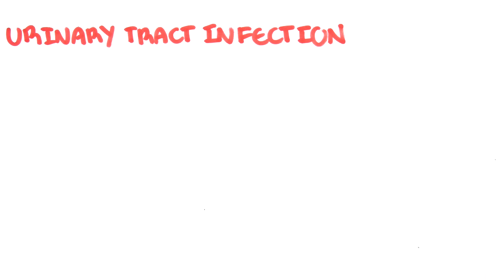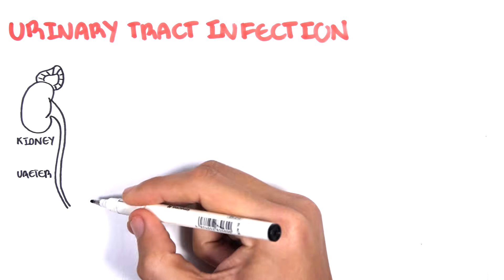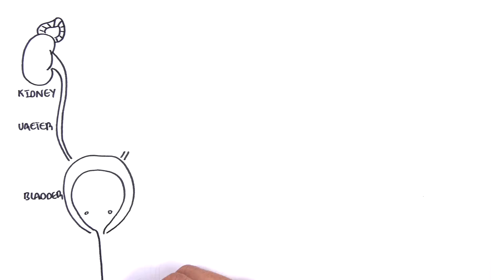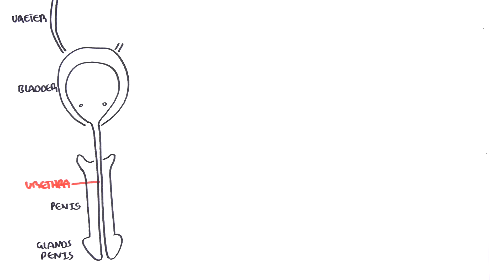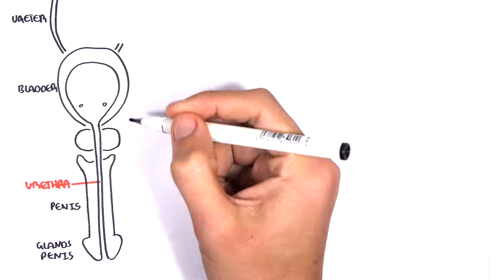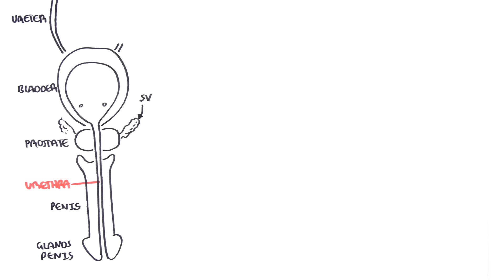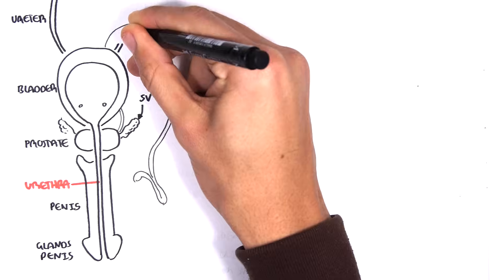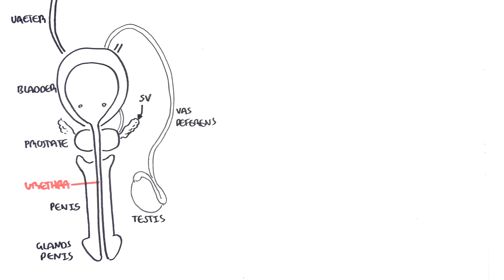Let us begin by looking at the male. Here we have the kidney. Coming off the kidney is the ureter, which carries urine into the bladder. Here we have the glans penis, the penis, and the urethra. Below the bladder we have the prostate. Coming past the prostate and into the urethra are the seminal vesicles, an important part of semen production. Then we have the vas deferens, the tube that runs from the testes, where sperm is produced.